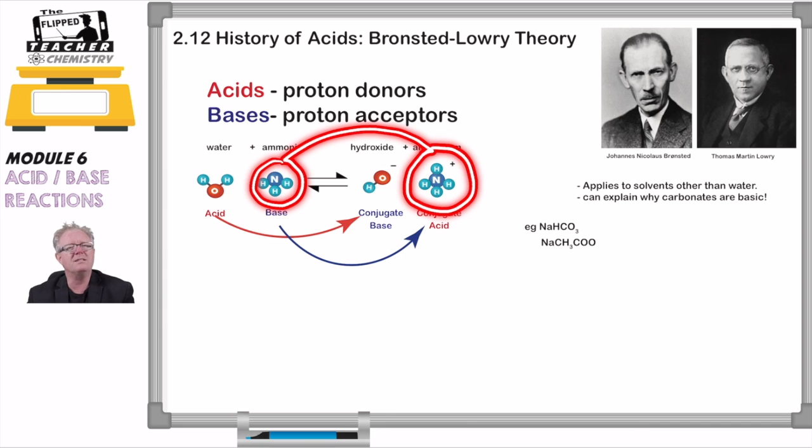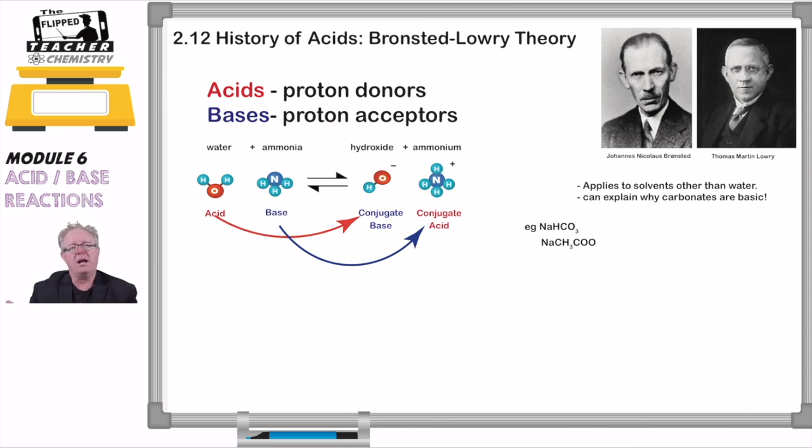Now with the Bronsted-Lowry definition, there's these new terms called conjugate acids and bases. A conjugate means a partner. In biology, we talk about conjugation, the fact that bacteria can conjugate or join up with each other in pairs to swap DNA. So to conjugate means to come together.